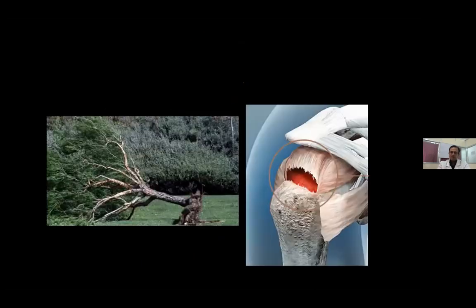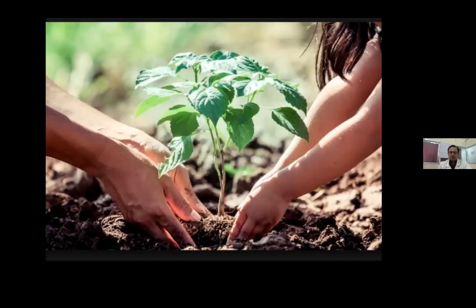I am going to divide my presentation into five heads: my philosophy, how do we diagnose it, patient factors, surgical options, and post-operative rehab. Regarding philosophy — rotator cuff tear is akin to an uprooted tree. Apart from the heart, the supraspinatus tendon is the only muscle in our body that is under continuous stretch, even at rest. We need to carefully plant it back during repair and ensure it takes good roots into the bone.